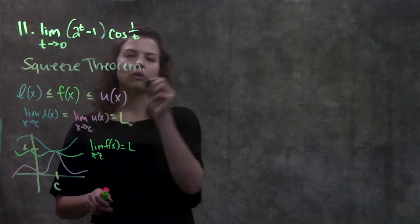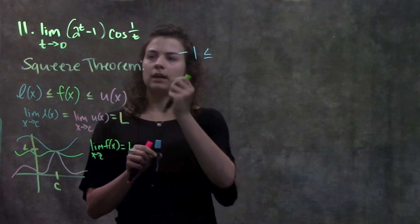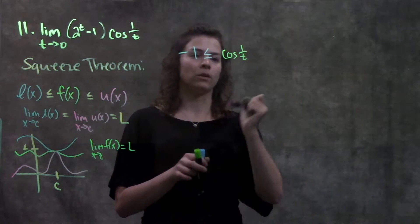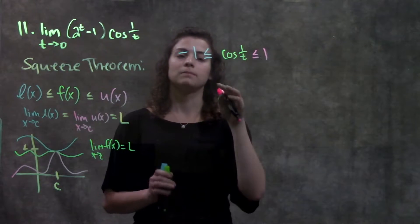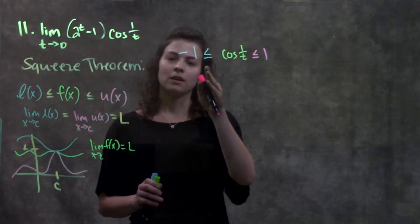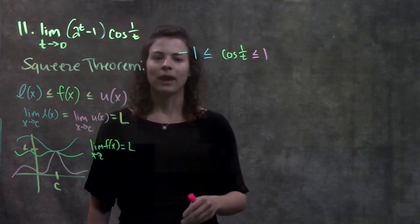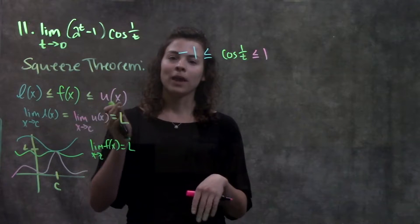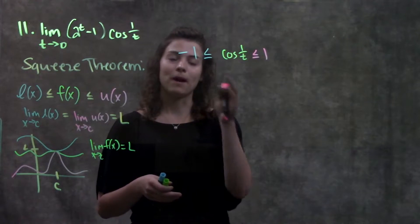So my lower bound gives us: negative one is less than or equal to cosine one over t, which is less than or equal to positive one. I put the cosine function in the middle because no matter what the inner angle is, cosine can never be less than negative one and never more than positive one. As a pro tip: if you ever have a trig function in a squeeze theorem problem, that's probably where you want to start, since both cosine and sine are always bound by positive and negative one.